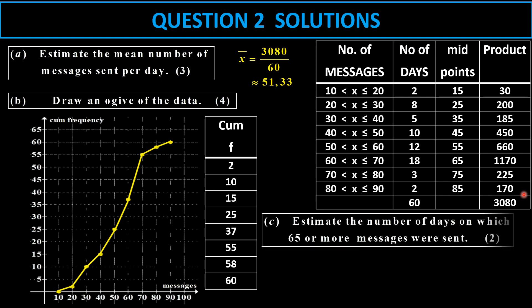Now we want to estimate the number of days. So it's 65 or more. There's 65. And we take the reading there, which is about, let's say it's 48. So the number there would be 60 minus 48. So there's 12.